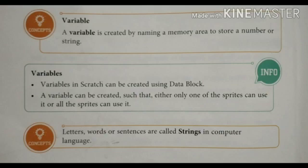Next is, what is a variable? Variable is created by naming a memory area to store a number or a string. What is string now? Letters, words or sentences are called strings in computer language. And variables in Scratch can be created using data block. A variable can be created such that either only one of the sprites can use it or all the sprites can use it.